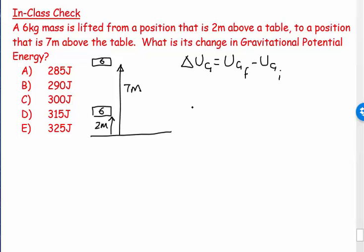This equals UG final minus UG initial, the gravitational potential energy at the end minus the gravitational potential energy at the beginning. UG is equal to MGH, so MGH final minus MGH initial.